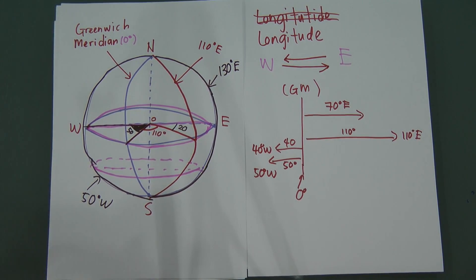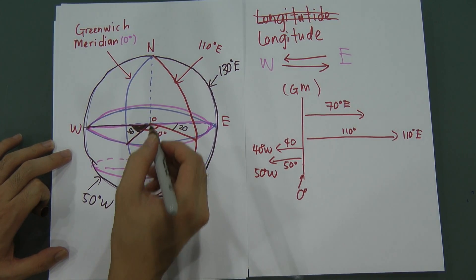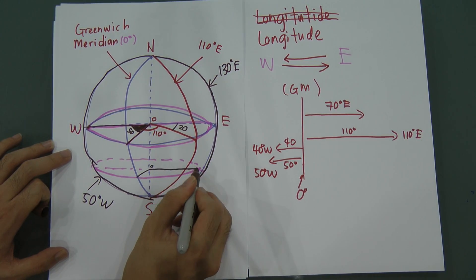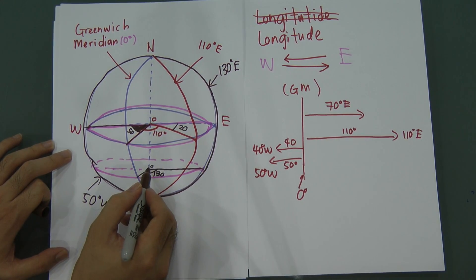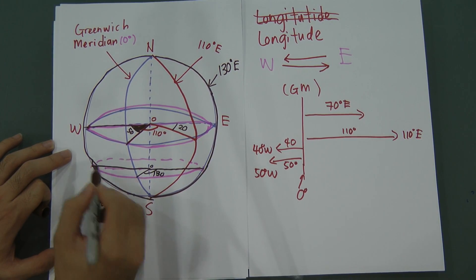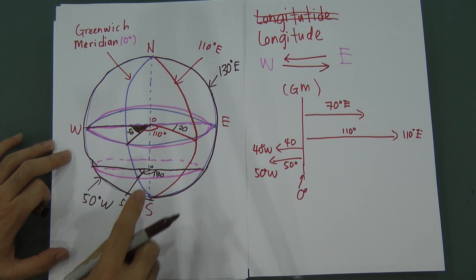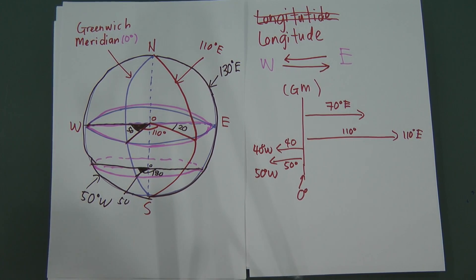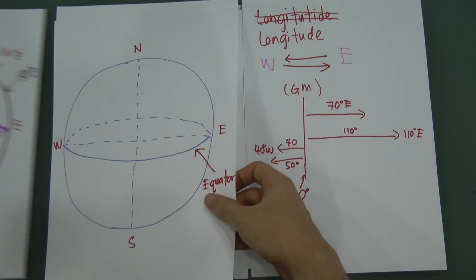From the Greenwich Meridian, if it moved 110 degrees and then another 20 degrees, that means from the Greenwich Meridian it has moved 130 degrees to the east side. So that longitude is called 130E. The angle between the Greenwich Meridian and the 50 West line is 50 degrees, and between the Greenwich Meridian and 130E is 130 degrees.